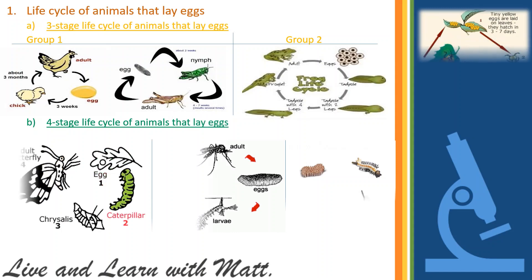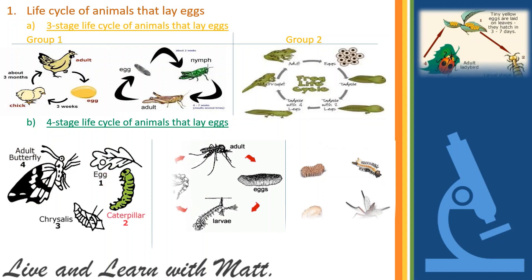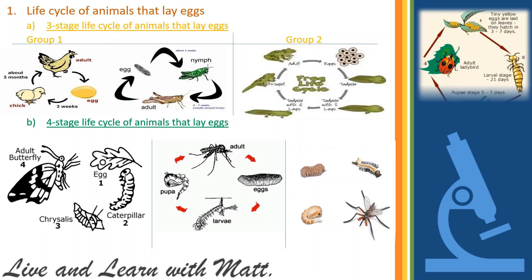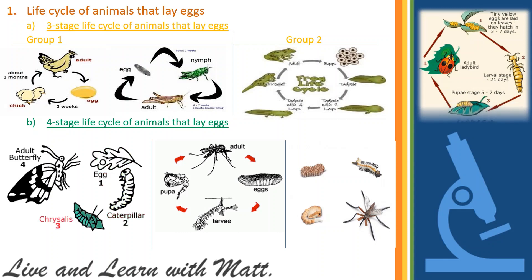Next: the four-stage life circle of animals that lay eggs. After hatching from their eggs, the young will go through changes in their look and will look like their parents when they are fully grown. Examples: butterflies, flies, ladybugs, mosquitoes, rhinoceros beetles, and fireflies.